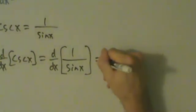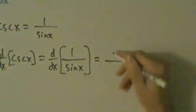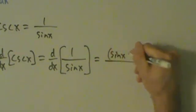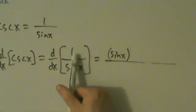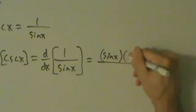And then the quotient rule tells us that's going to be bottom, just sine of x, times the derivative of the top. The top is 1, it's just a constant, so its derivative is 0.